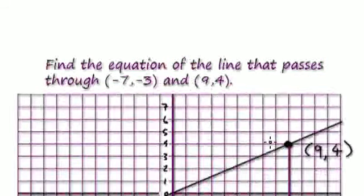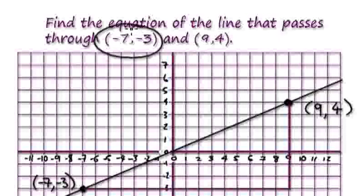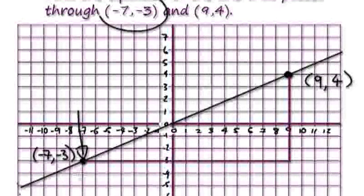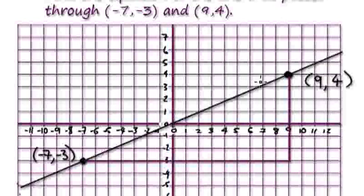I want to show you something that's really strange. Find the equation of the line that passes through this point and this point here. Normally we would draw a quick graph — this point here is here on the graph, and this point here is here. We've got to find the equation of the line that passes through those two points, which is this one here.